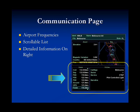The next page is the communication page which displays all of the possible frequencies for the selected airport. It's very similar to the runway page in that there's a scrollable list of items on the left-hand side and a detailed display on the right-hand side. The detailed information includes the frequency call sign, sector, the service, and the narrative. As you can see here, there is no sector or narrative for the selected frequency.